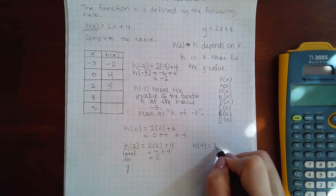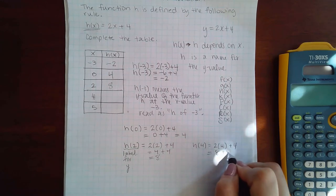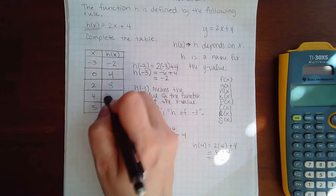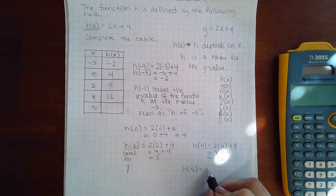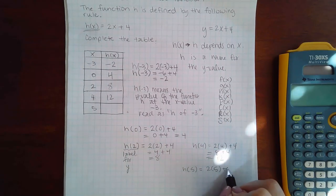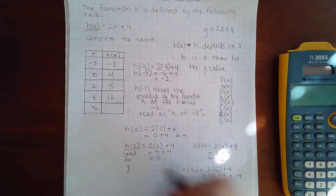H of 4 is 2 times 4 plus 4. So I get 8 plus 4, which happens to be 12. And then finally, h of 5, which is 2 times 5 plus 4, which is 10 plus 4, or just 14.